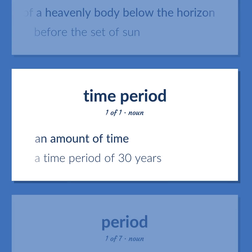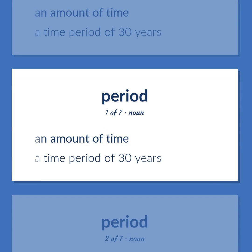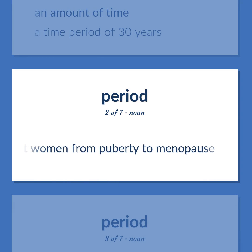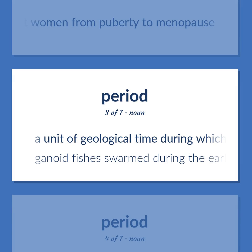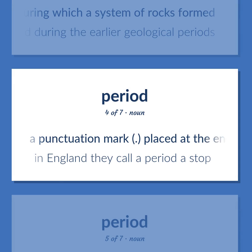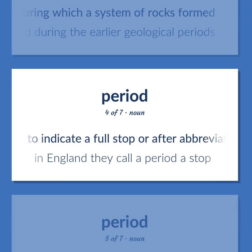PERIOD: An amount of time — a time period of 30 years. The monthly discharge of blood from the uterus of non-pregnant women from puberty to menopause. A unit of geological time during which a system of rocks formed — ganoid fishes swarmed during the earlier geological periods. A punctuation mark placed at the end of a declarative sentence to indicate a full stop or after abbreviations — in England they call a period a stop.